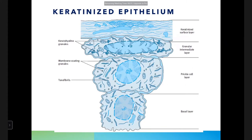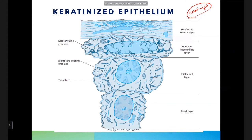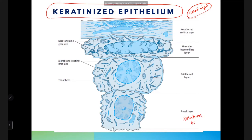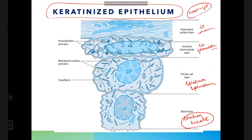Keratinized epithelium has four layers: stratum basale (basal), stratum spinosum, stratum granulosum, and stratum corneum. Names are based on morphologic appearance of cells in each layer. Cells from the basal layer undergo mitosis and some migrate toward the superficial layer, undergoing keratinization in the process.